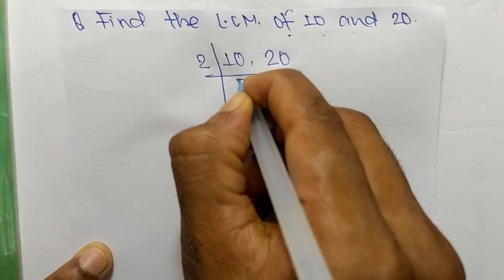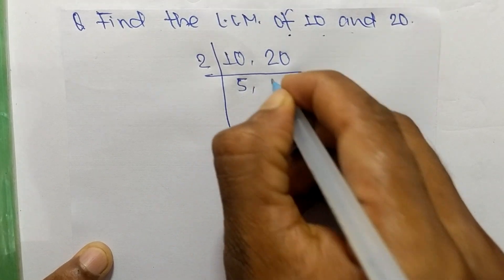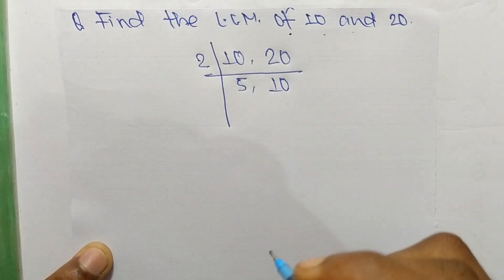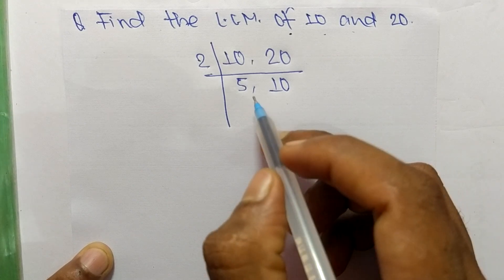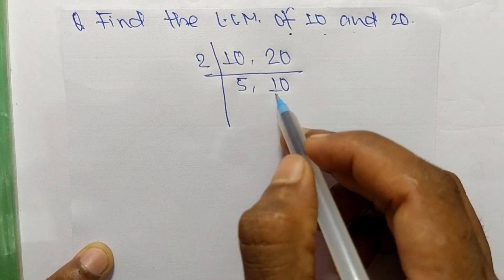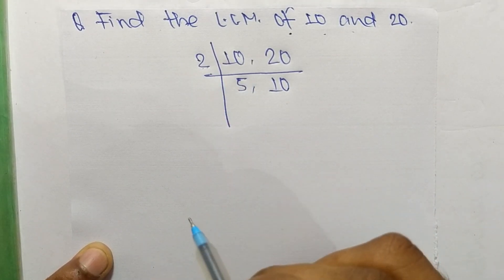So 2 times 5 means 10 and 2 times 10 means 20. So now we have here 5 and 10 which are not exactly divisible by 2.